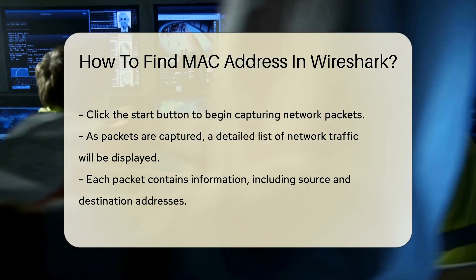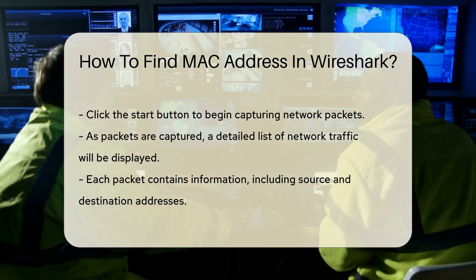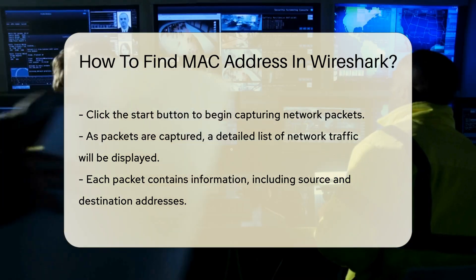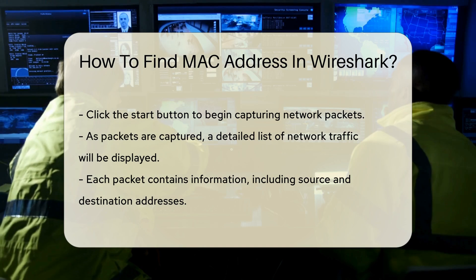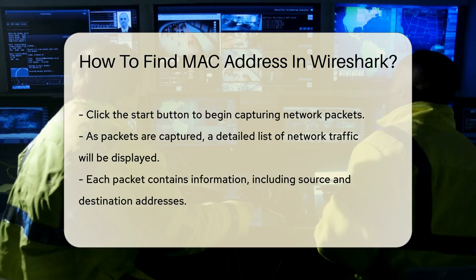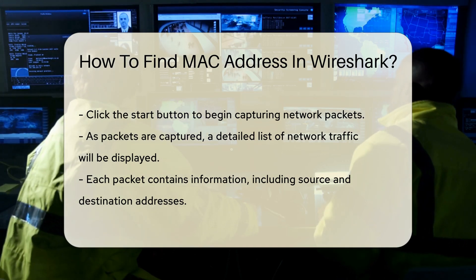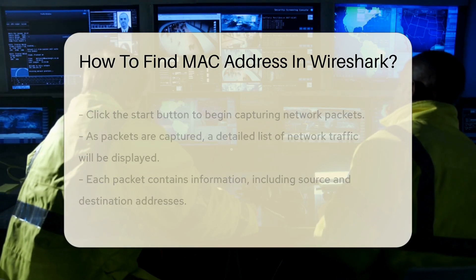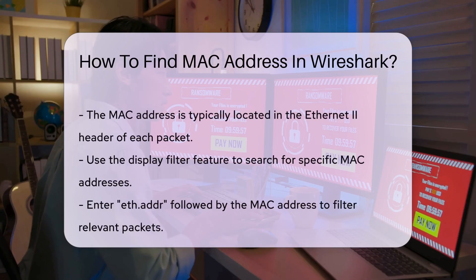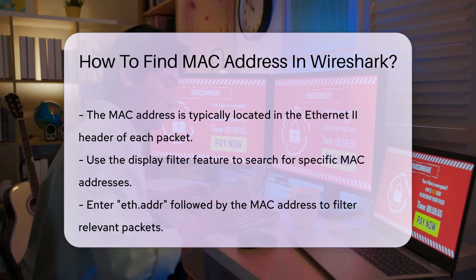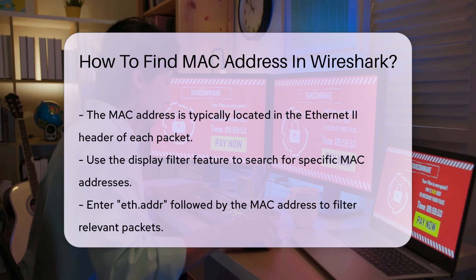To filter for MAC addresses, utilize the display filter feature. Enter eth.addr followed by the specific address you are interested in. This will help narrow down the packets to those relevant to the MAC address you are searching for.